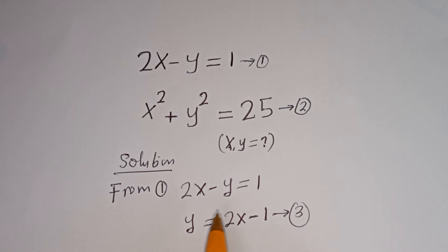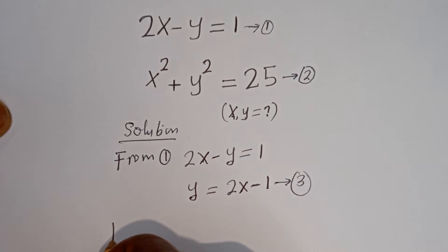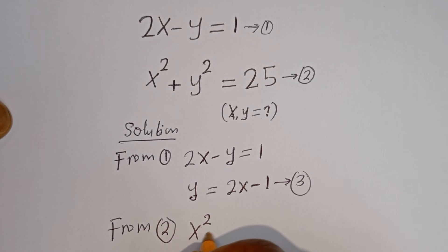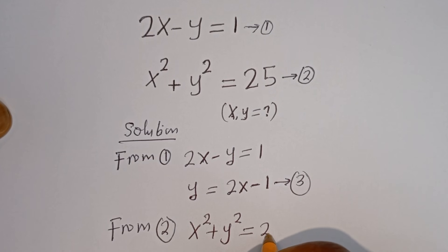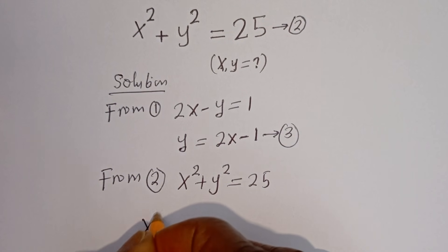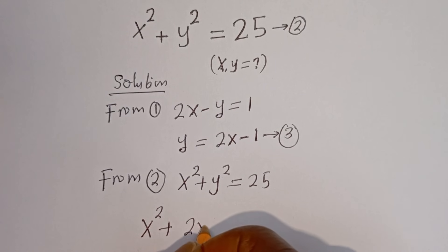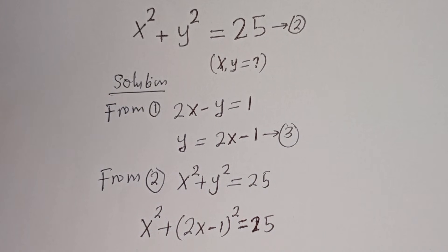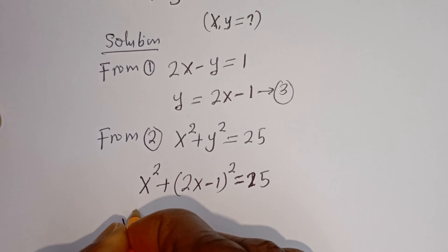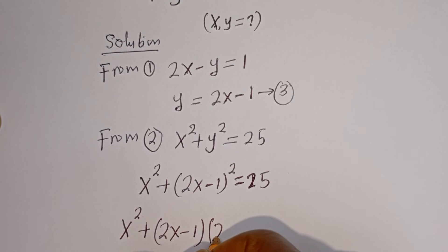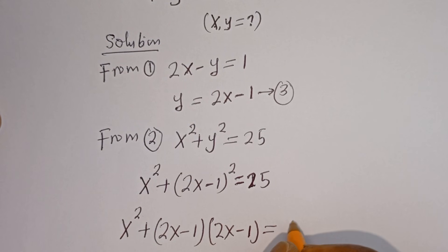Now we can substitute equation 3 into equation 2. From equation 2, x squared plus y squared is equal to 25. When y is equal to 2x minus 1, we substitute to get x squared plus bracket 2x minus 1 bracket squared is equal to 25.